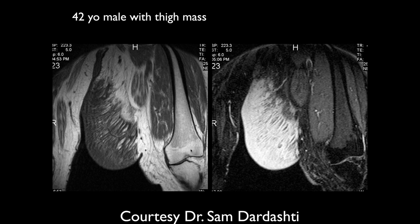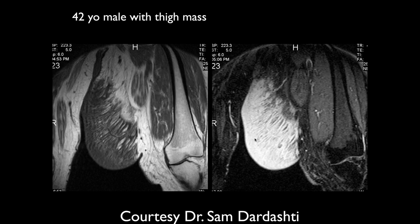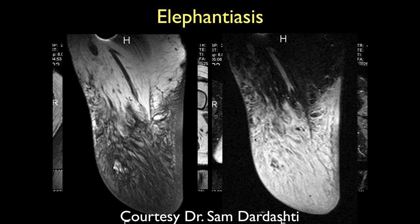A 42-year-old male presents with thigh swelling. The thigh is extremely enlarged with edema within the superficial adipose tissue. This is actually lymphatic fluid — lymphatic obstruction causing massive swelling. This is elephantiasis, which refers to lymphatic obstruction secondary to parasitic infection, usually filariasis. It's most common in Africa but can occur in Southern California — caused by worms blocking the lymphatic system and obstructing lymphatic drainage.